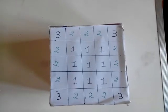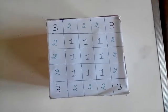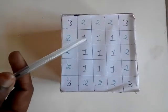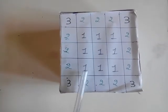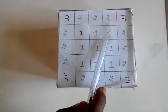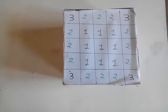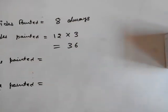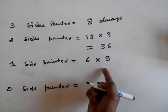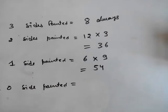My 3rd question: how many cubes will have their 1 face painted? The cubes which are not lying on the edges will have only 1 face painted. On 1 face we have 9 such cubes. Since we have 6 faces in total, the total number of cubes having only 1 side painted will be 6 × 9 = 54.